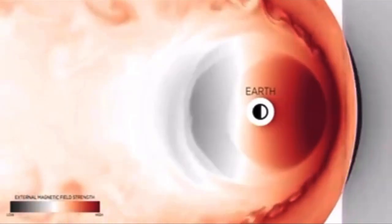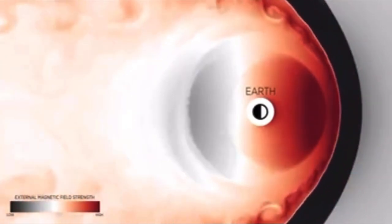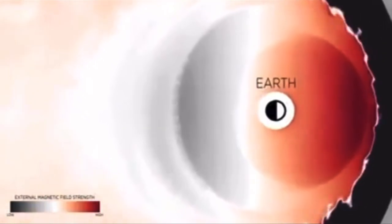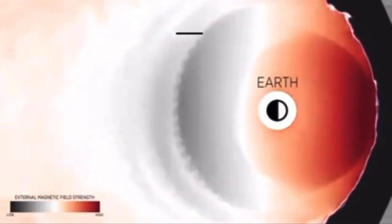They found that when particularly large streaming clouds of plasma from the sun reached Earth's magnetic field, they created buoyant bubbles of plasma behind the planet.